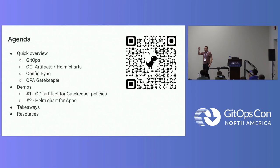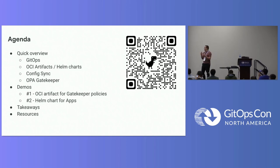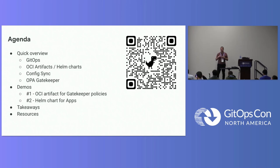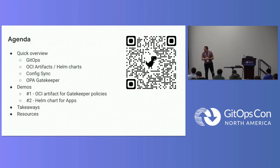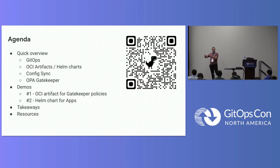This QR code links to the actual presentation so you could download the PDF. Quick overview: we are on a GitOps day, so there is plenty of content defining GitOps. In this presentation we will cover OCI artifacts and Helm chart and their advantages, ConfigSync as one of the GitOps tools, and OPA Gatekeeper. We will have two demos and some takeaways and resources at the end.